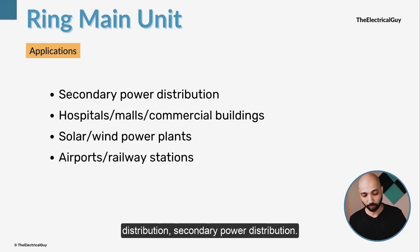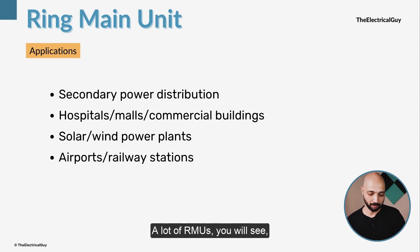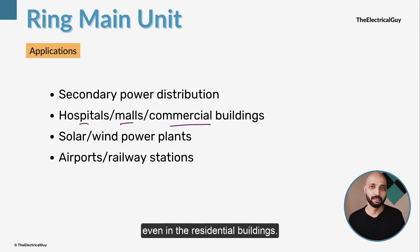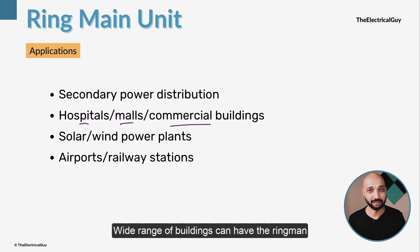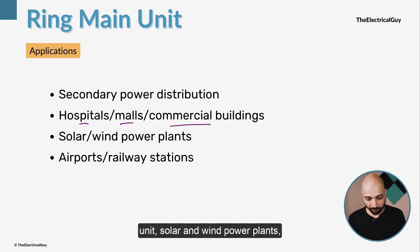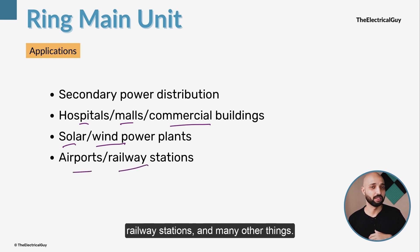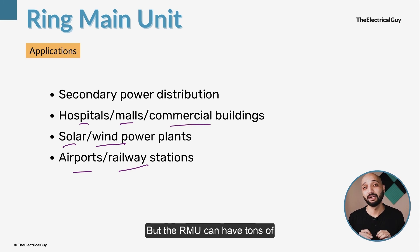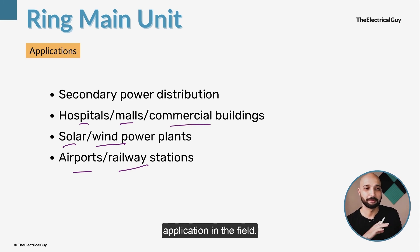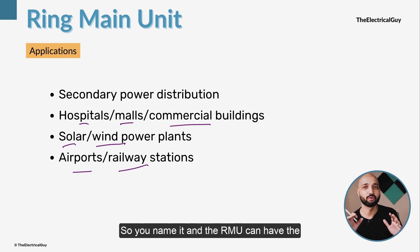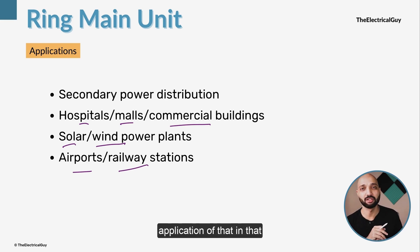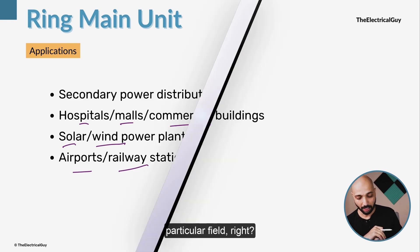In terms of applications, the RMU is majorly used in secondary power distribution. It can be found in hospitals, malls, commercial buildings, and residential buildings. It is also used in solar and wind power plants where generation happens at lower voltages, as well as in various infrastructure projects such as airports and railway stations. The RMU has a very wide range of applications across many fields.